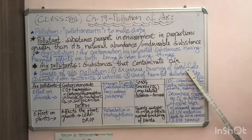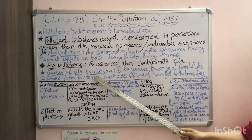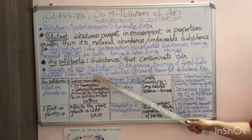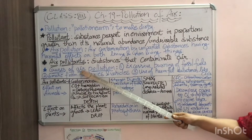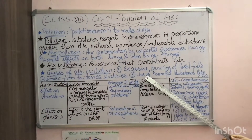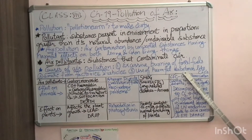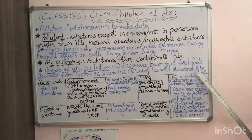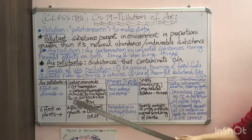Burning of wood will also lead to air pollution, even though it is not a fossil fuel. Smoke from factories and vehicles is also a main cause of air pollution. The last cause is the use of some harmful substances by human beings, like CFCs — chlorofluorocarbons — which are also a cause of air pollution.